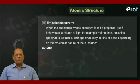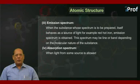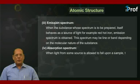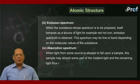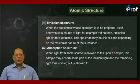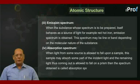Number four, absorption spectrum. When light from some source is allowed to fall upon a sample, this sample may absorb some part of the incident light, and the remaining light thus coming out is allowed to fall on a prism. Then the spectrum obtained is called absorption spectrum.